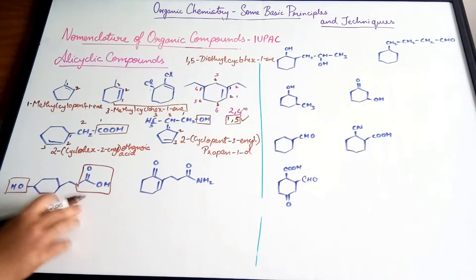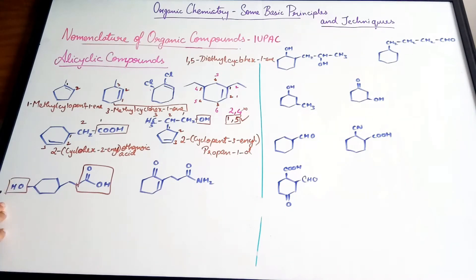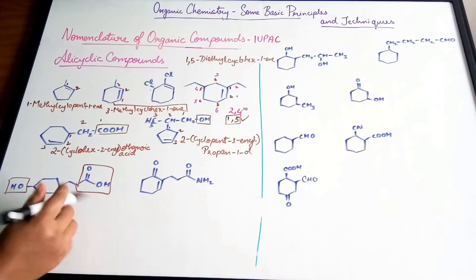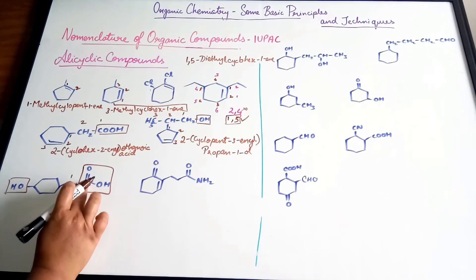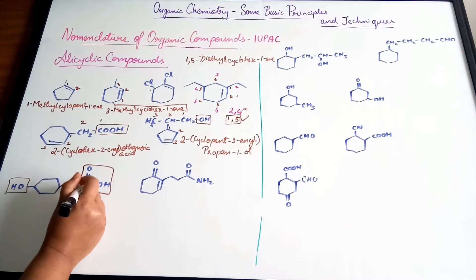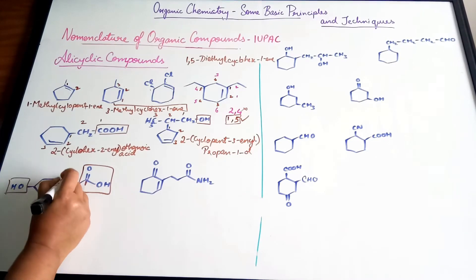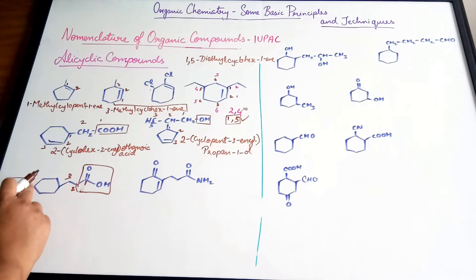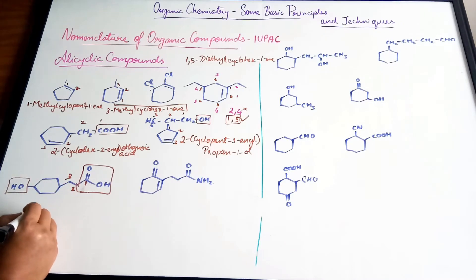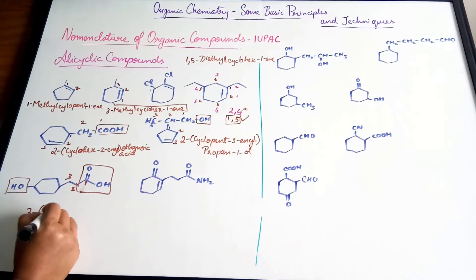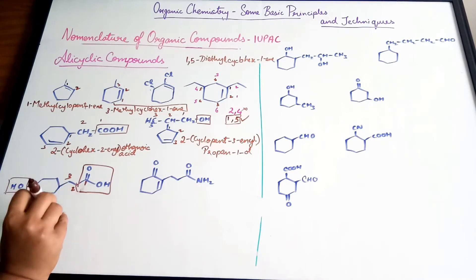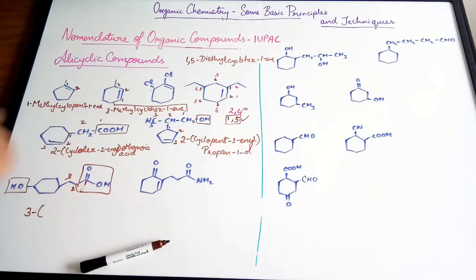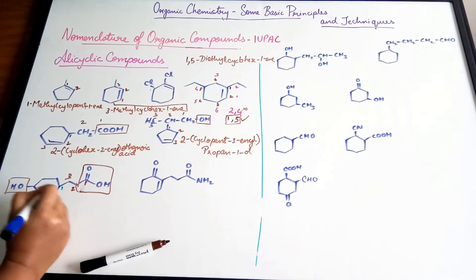Here we have an acid group and an alcohol group; acid has higher priority than alcohol. So the compound is an acid. Numbering so the principal functional group gets the lowest number: position one is the acid, and at position three we have a ring bearing a hydroxyl group — a cyclohexane with a hydroxyl group.